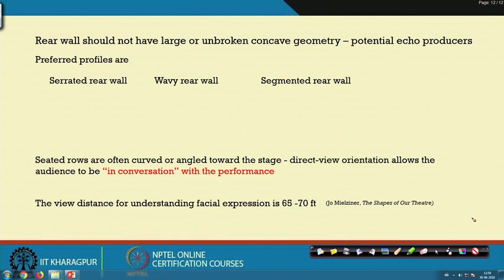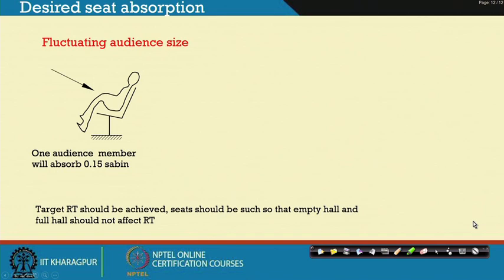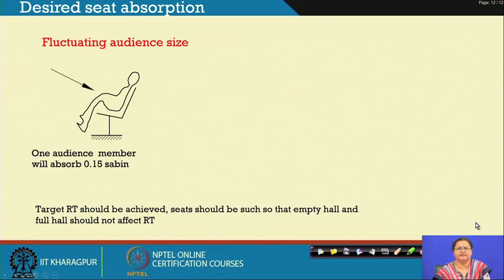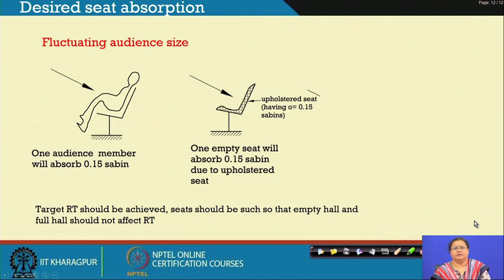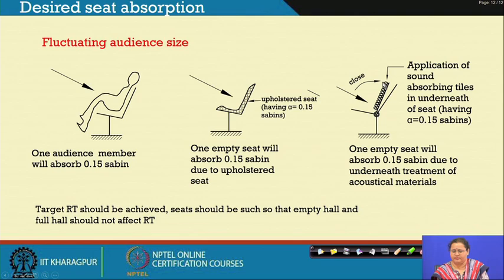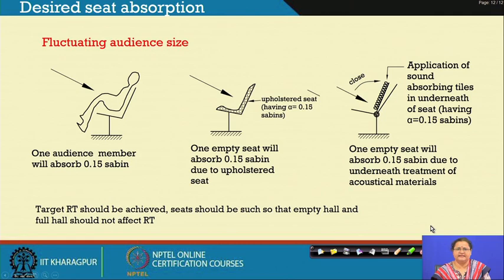Coming to seat absorption: audience size can fluctuate. If it is a thousand-seat hall and only 500 people come, but you calculated with an audience absorption of 0.15 sabine per person, the target RT can be affected. An empty seat must have equivalent sound absorption so that the target RT achieved in a full hall matches that of an empty hall. You can plan for upholstered seats with absorbers beneath so that each vacant seat has absorption equivalent to a human sitting there. Keeping these things in mind is a great help for achieving better acoustics.